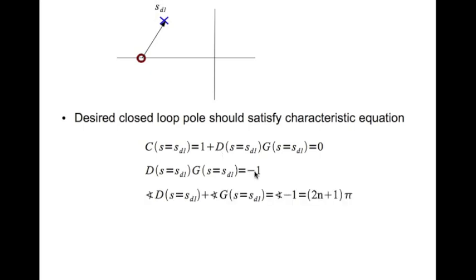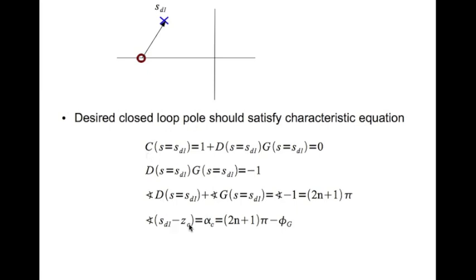Taking the angle on both sides: angle of D at s = s_d1, plus angle of G at s = s_d1, equals angle of minus 1, which is (2n+1)*pi for n = 0, 1, 2, ... Adding 2*pi doesn't change the condition. So the angle of D, which is the angle alpha_c of the vector (s_d1 - zc), equals (2n+1)*pi minus the angle of G evaluated at s_d1.